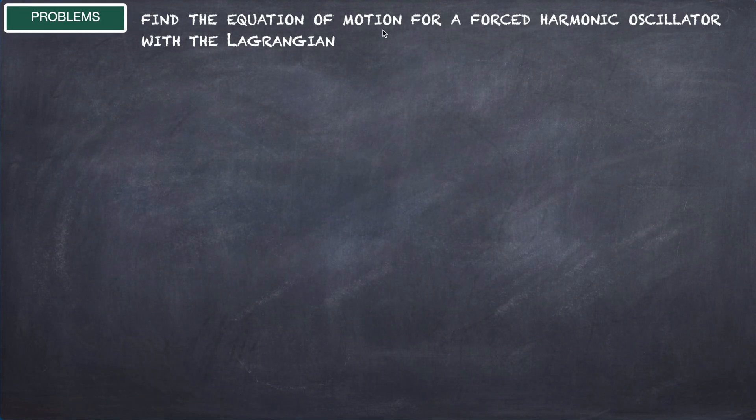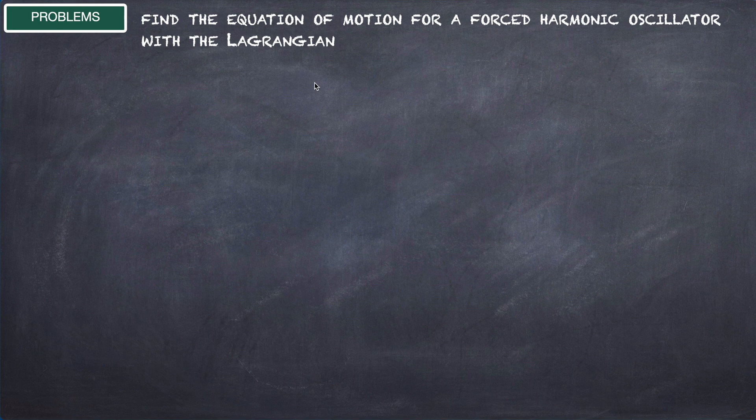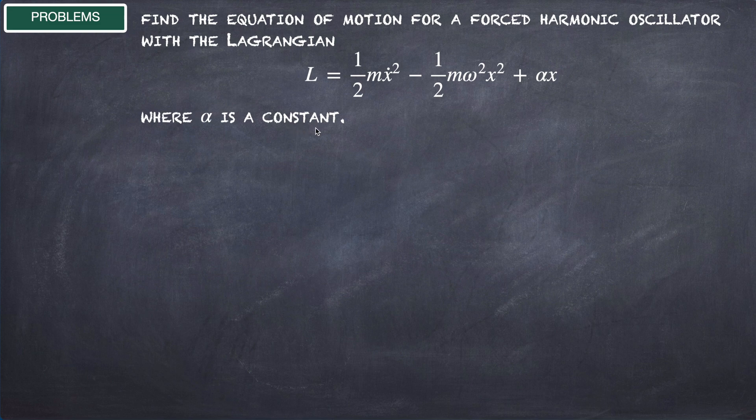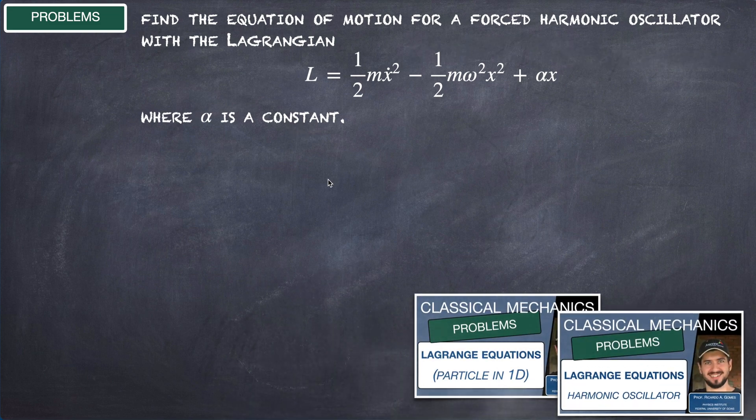Find the equation of motion for a forced harmonic oscillator with the Lagrangian: L = (1/2)m(ẋ)² - (1/2)mω²x² + αx, where α is a constant.